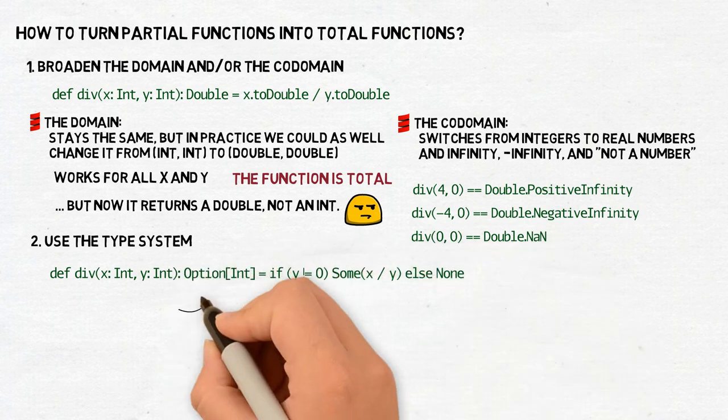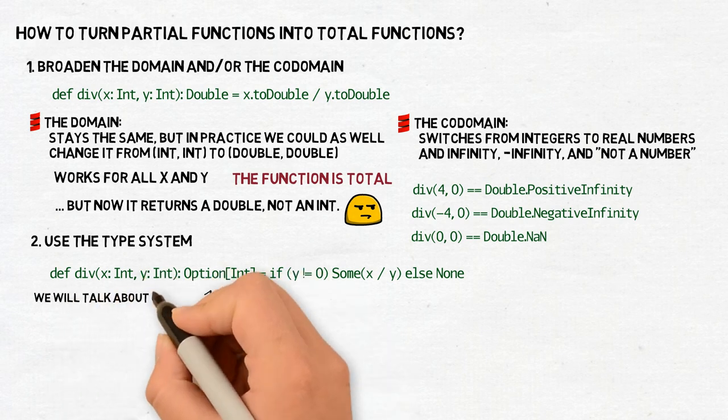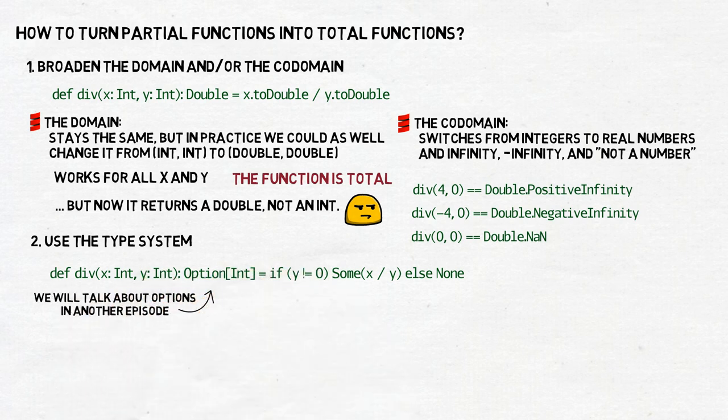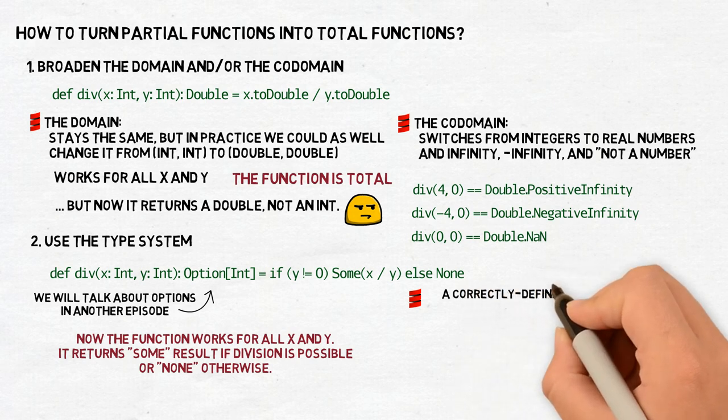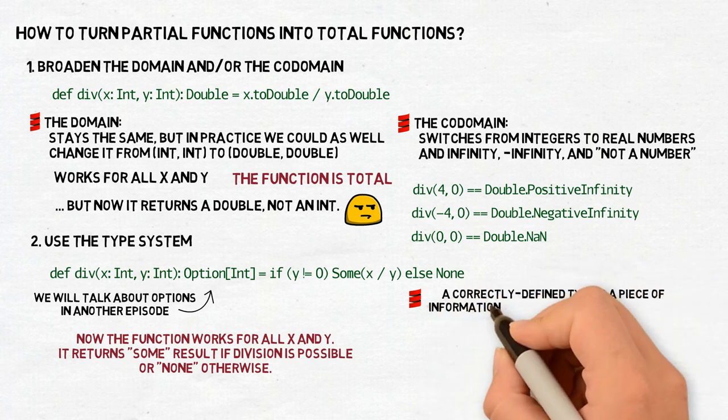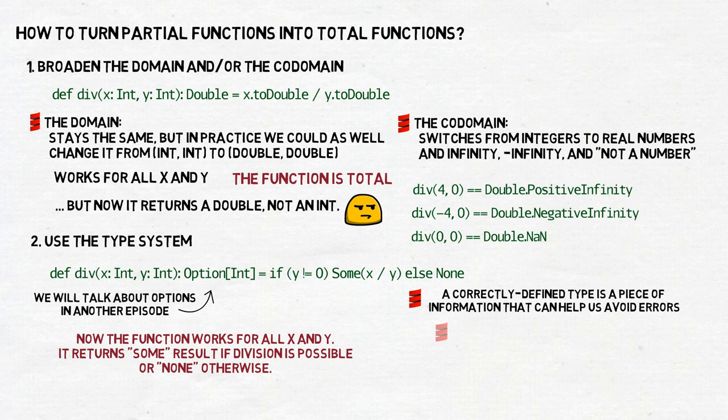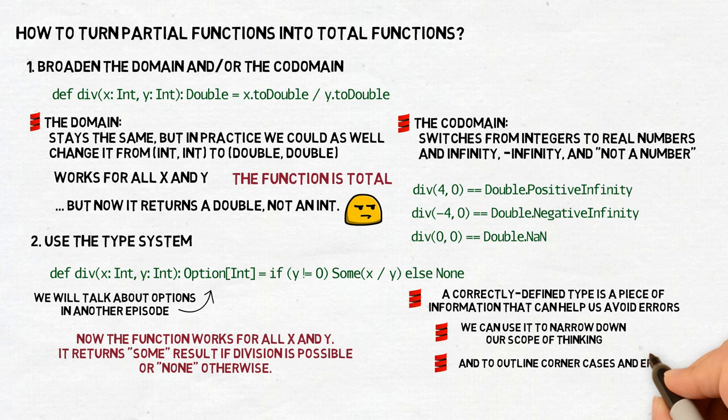Here the only thing that is important right now is that it gives us better control. A correctly defined type is a piece of information that can help us avoid many errors. We can use this information to narrow down our scope of thinking and focus on what's important to us, our happy path, and at the same time clearly outline corner cases and errors. We can also pass it to other developers as a form of minimalistic but always available and always up-to-date documentation.